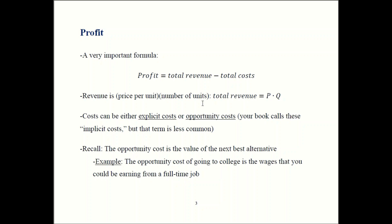Costs can come in one of two forms: explicit costs and opportunity costs. As for terminology, your book refers to them as explicit costs and implicit costs. However, that term is rather idiosyncratic — most books will not say implicit costs, most books will say opportunity costs. We learned about opportunity costs way back in Chapter 1 as one of our five foundations of economics, and we defined opportunity costs to be the value of your next best alternative.